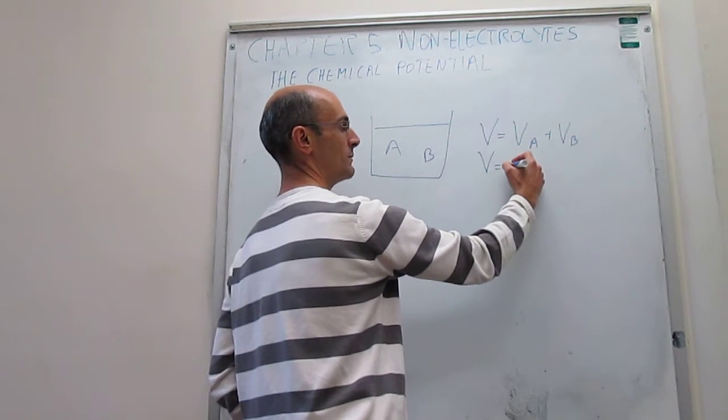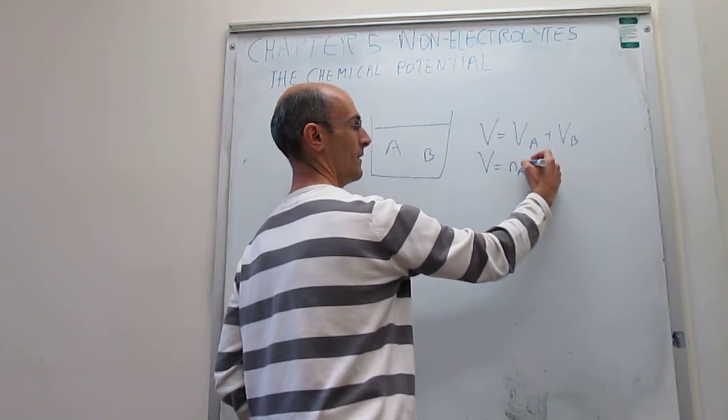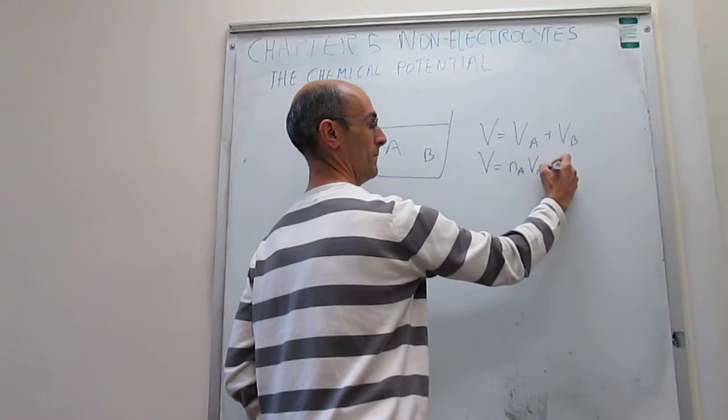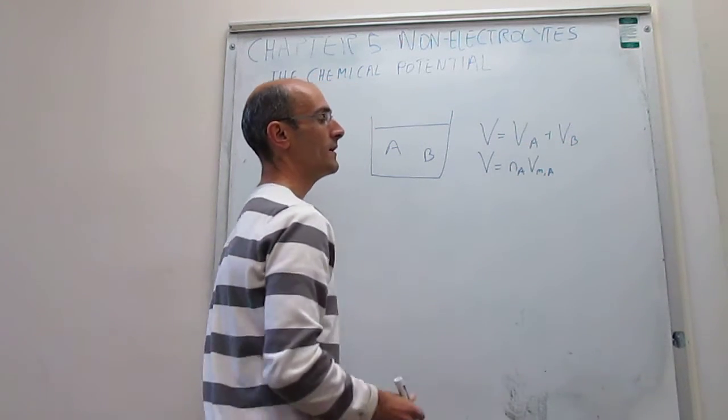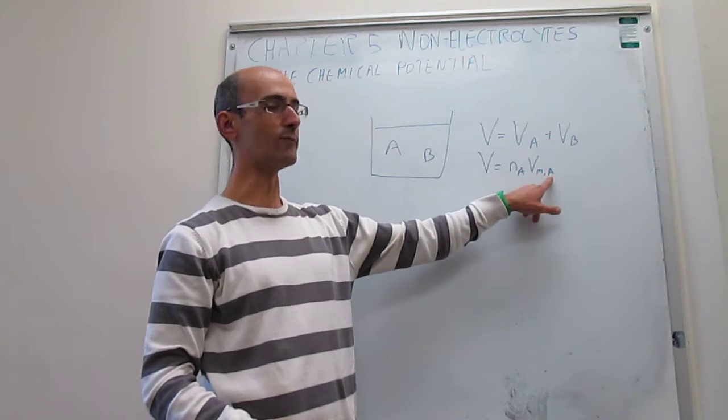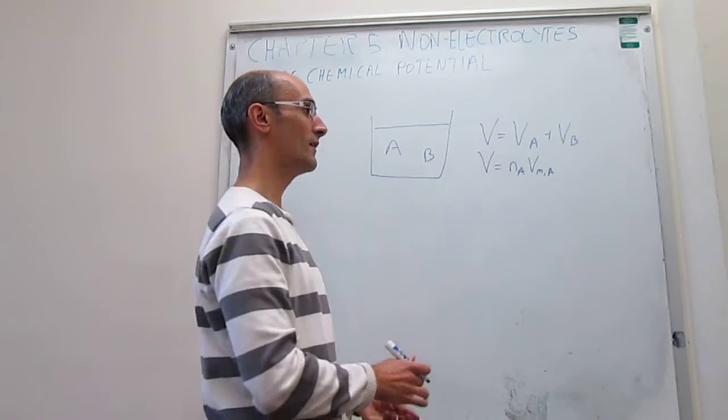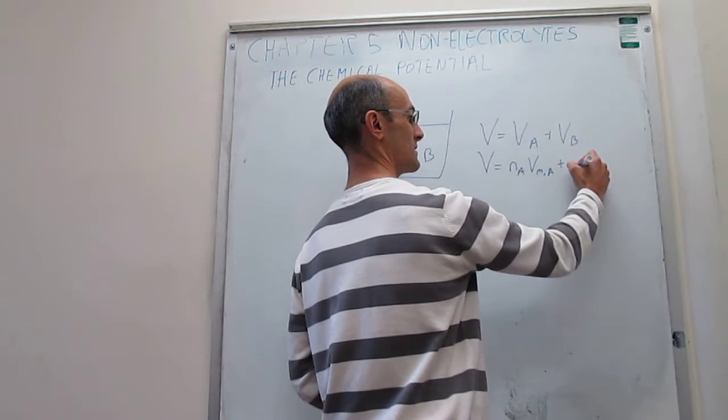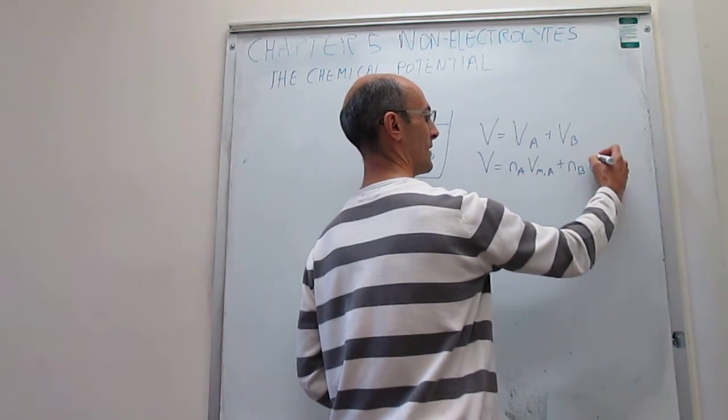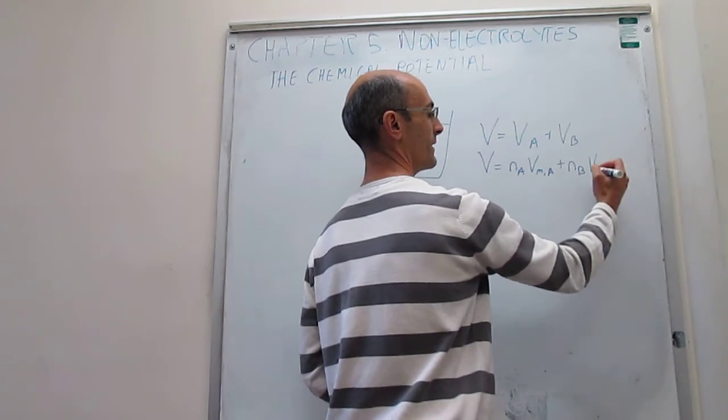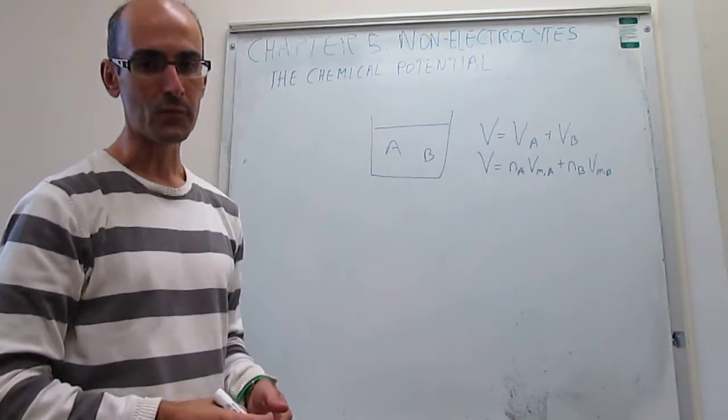So a way to rewrite this in terms of molar quantities would be to say that the volume of A is simply going to be the contribution per mole of A multiplied by the number of moles of A that you have, and then the volume of B is just going to be equal to the number of moles of B that you have multiplied by the contribution per mole.